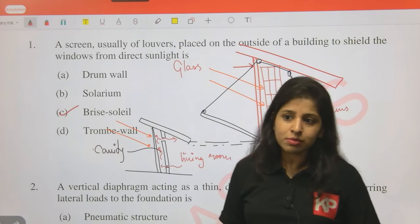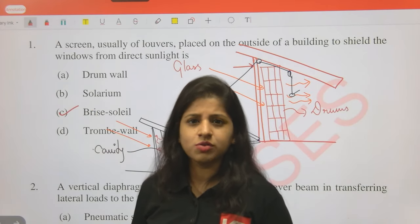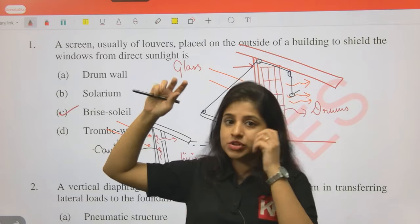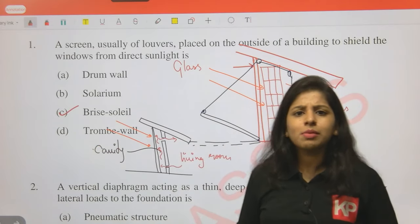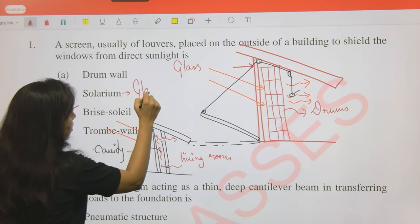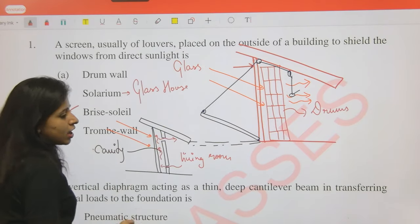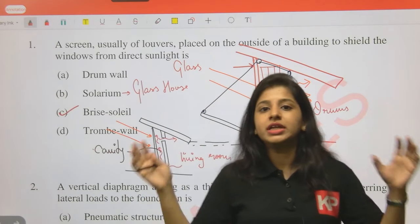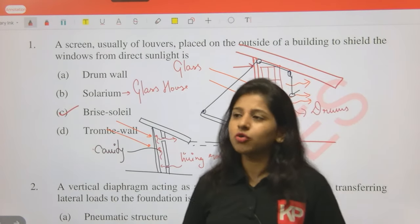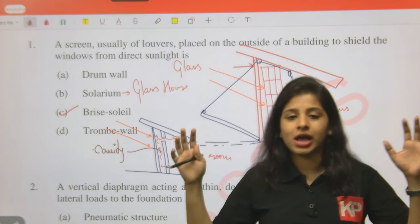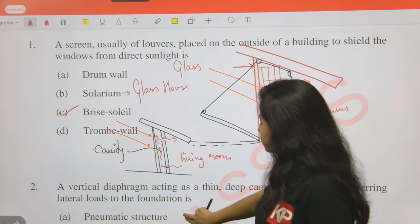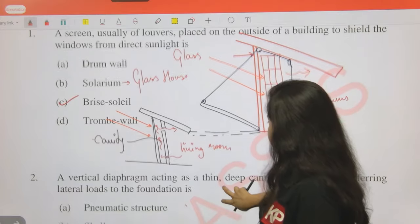Solarium was initially used in Greek houses - it refers to a roof room or glass house on top of a terrace completely lit by sunlight. A solarium is like a glass room whose primary purpose is to have maximum sunlight. So now you know what all the different options mean.